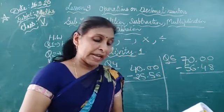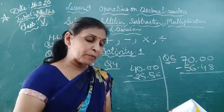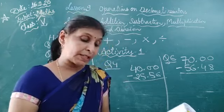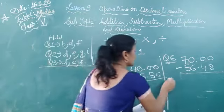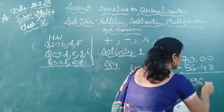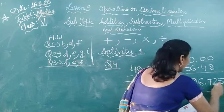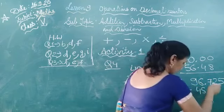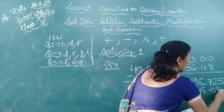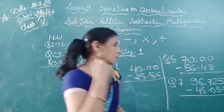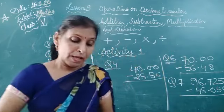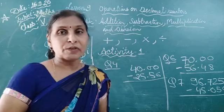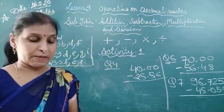Question number 7, by how much should 96.725 be decreased to get 45.05? In this also we will subtract. Question number 7, 96.725 minus 45.05. You have to subtract this. So questions 4, 5, 6 and 7, you will solve in your classwork notebook.